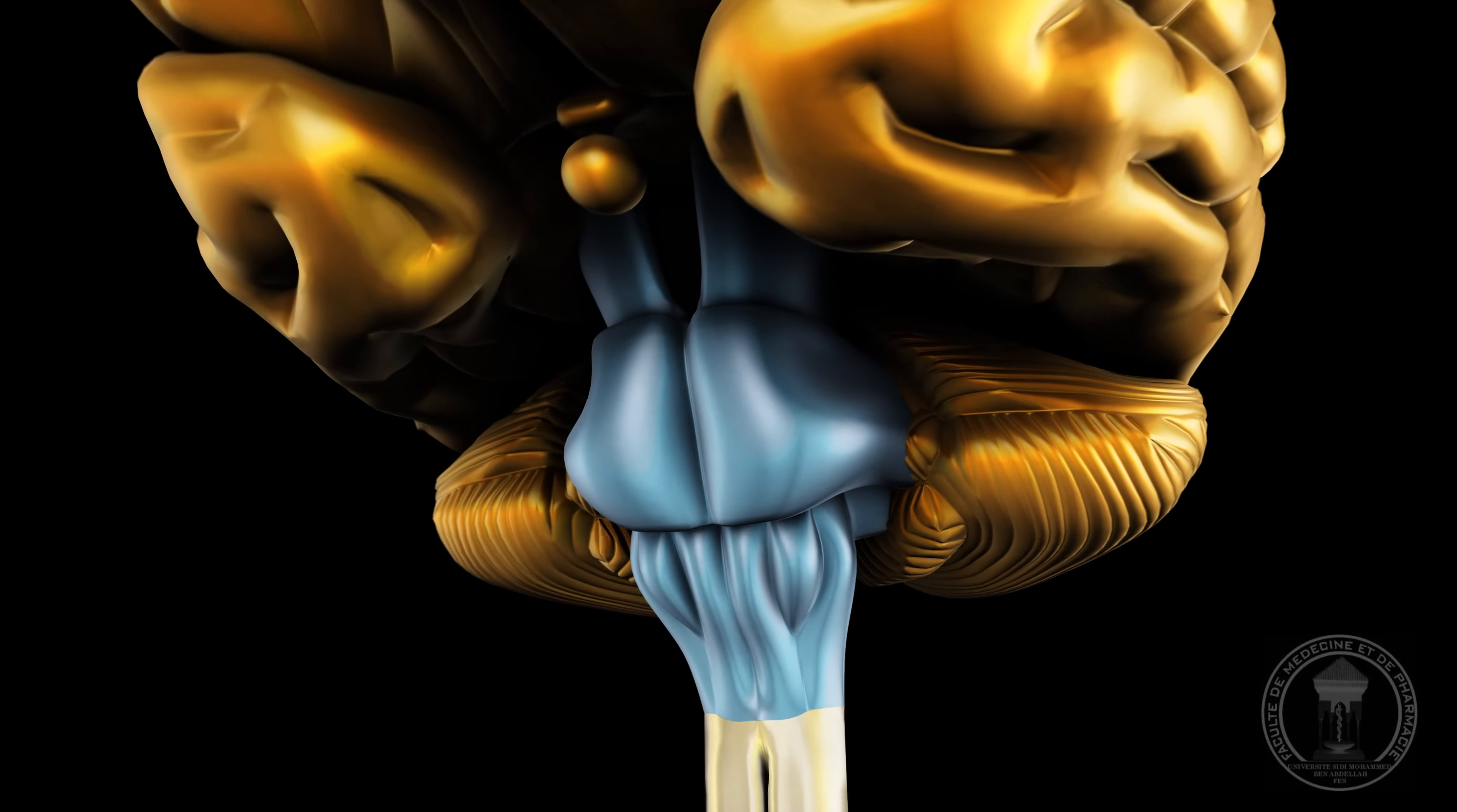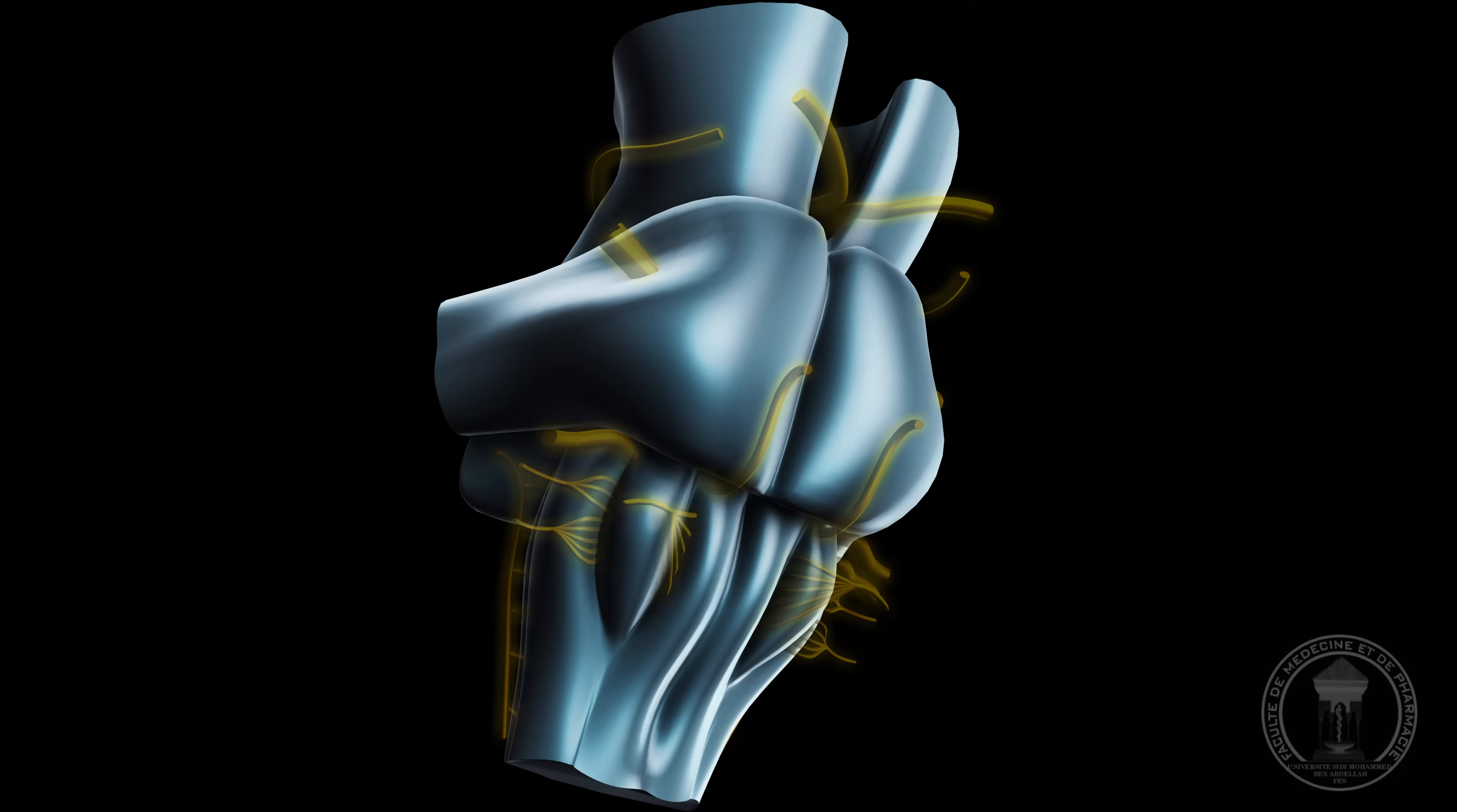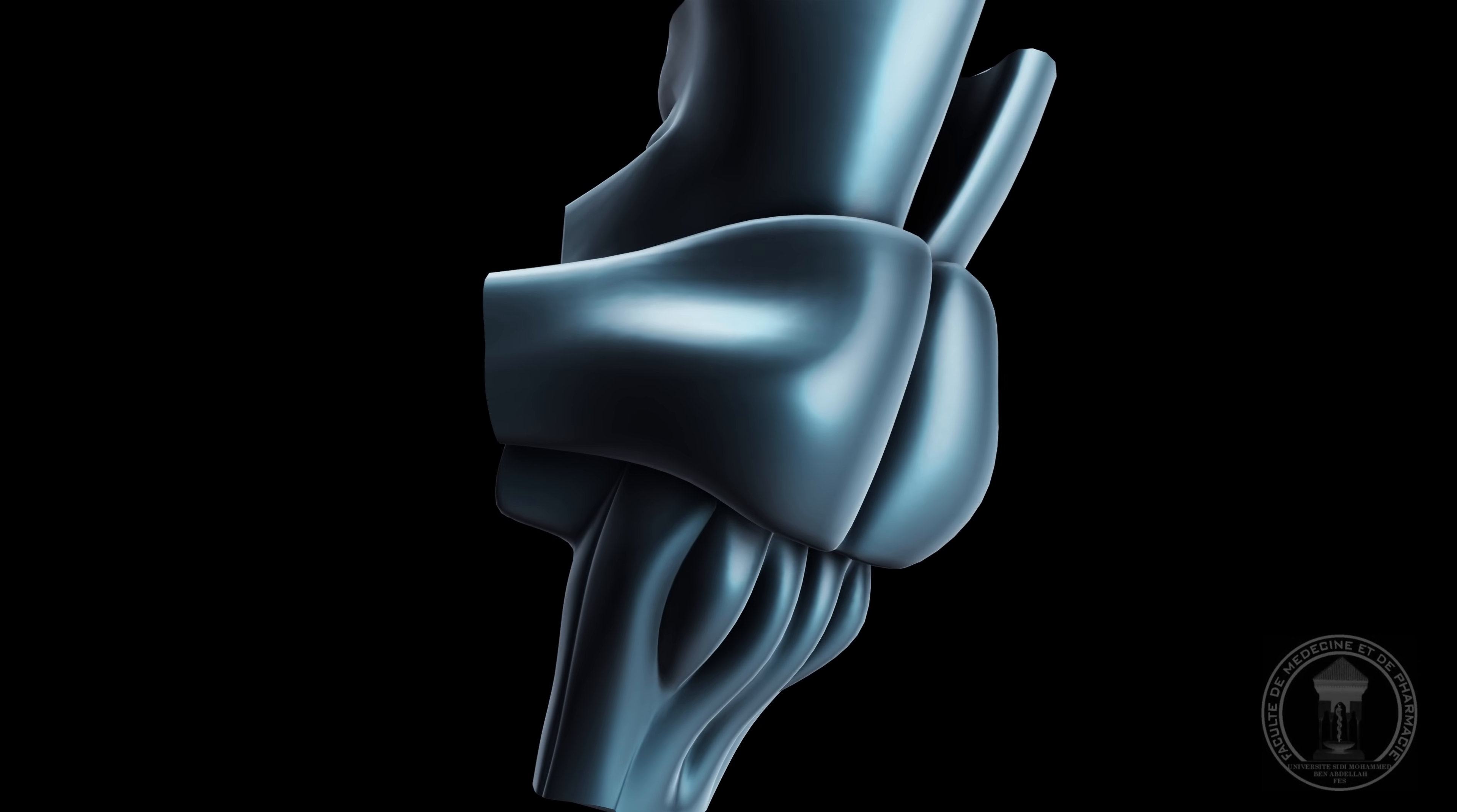The brainstem represents the emergence area of most cranial nerves. We distinguish three parts to the brainstem: the midbrain, the pons and the medulla.